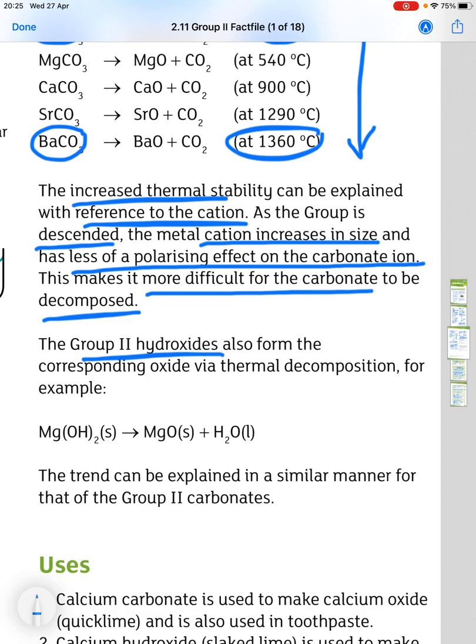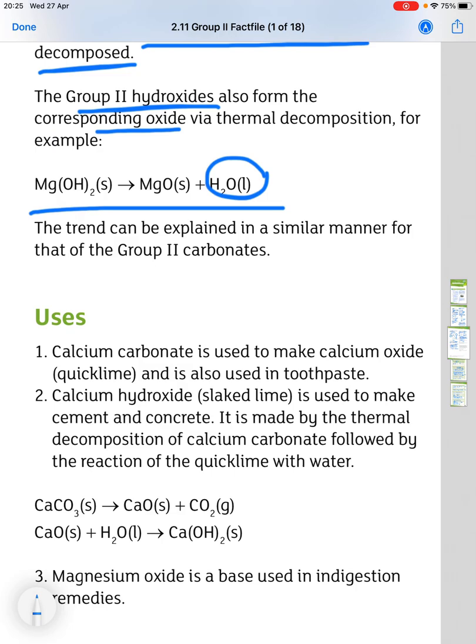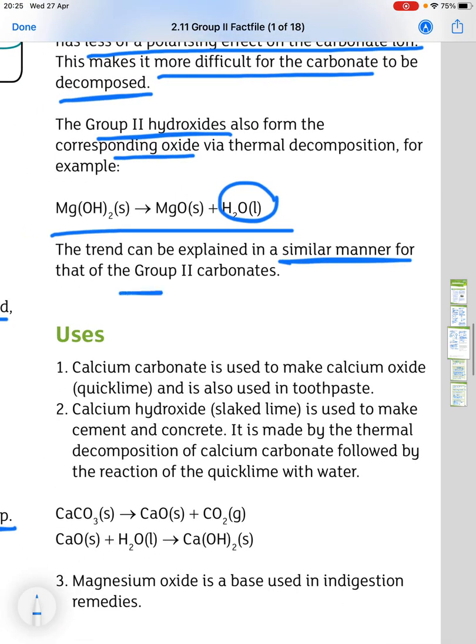The Group 2 hydroxides also form the corresponding oxide by thermal decomposition. They produce water in the reaction. So, magnesium hydroxide will decompose to give magnesium oxide and water. And the trend can be explained in a similar manner for that of the Group 2 carbonates.